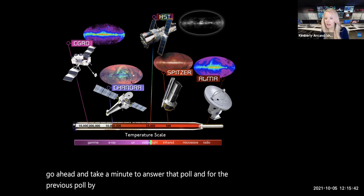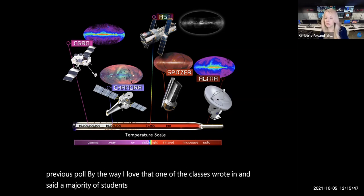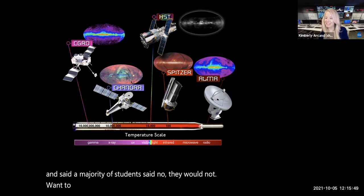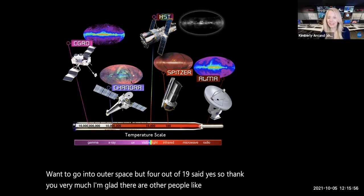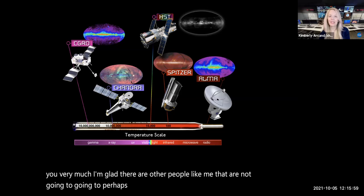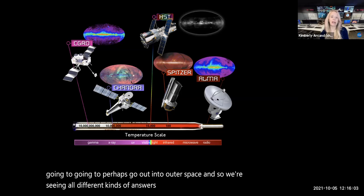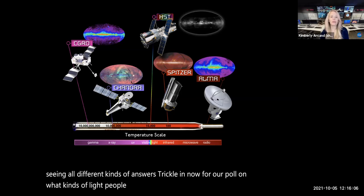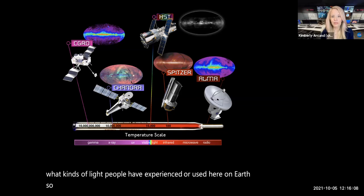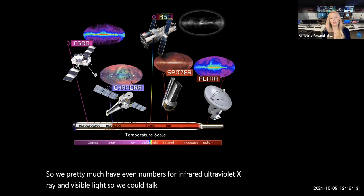So we are essentially asking what kinds of electromagnetic radiation or light have you used in your life at some point? And we have four possible answers that you can choose. You can choose all of the above if you like: infrared, ultraviolet light, x-rays, or visible light. Go ahead and take a minute to answer that poll. And for the previous poll, by the way, I love that one of the classes wrote in and said a majority of students said no, they would not want to go into outer space. But four out of 19 said yes. So thank you very much. I'm glad there are other people like me that are not going to perhaps go out into outer space.